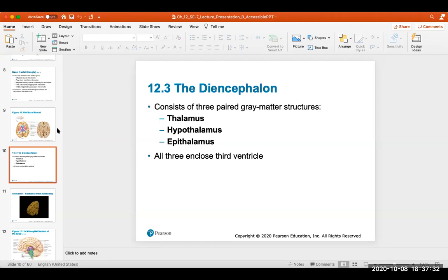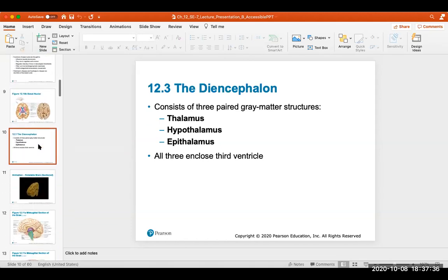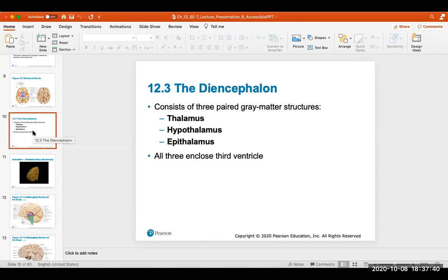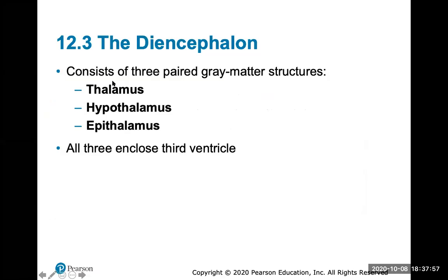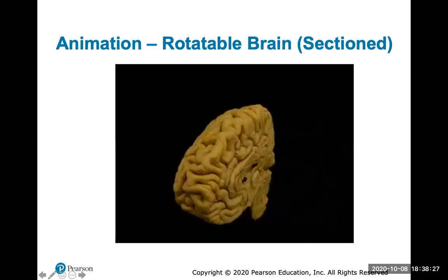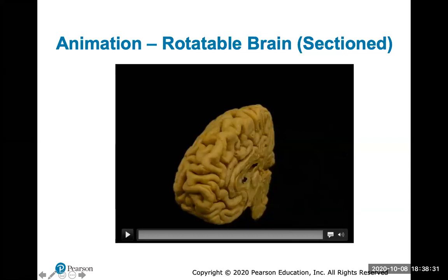We're now in part B, focusing on the diencephalon — made up of your thalamus, hypothalamus, and epithalamus. These three structures are incredibly important in the nervous system. The thalamus receives all sensory stimuli and processes it, directing it to the appropriate parts of the brain. The hypothalamus is located directly below the thalamus and controls hormone secretion. The epithalamus is above the thalamus. All three are gray matter structures that enclose the third ventricle.